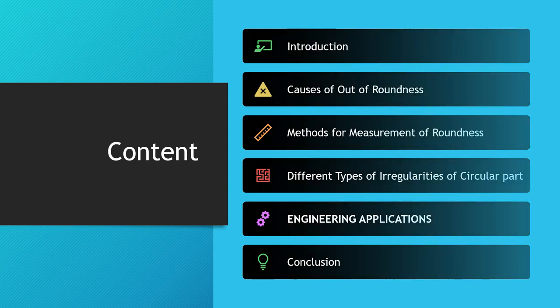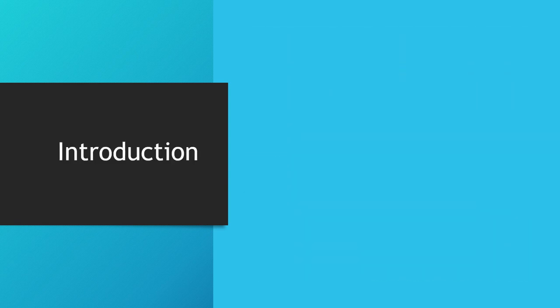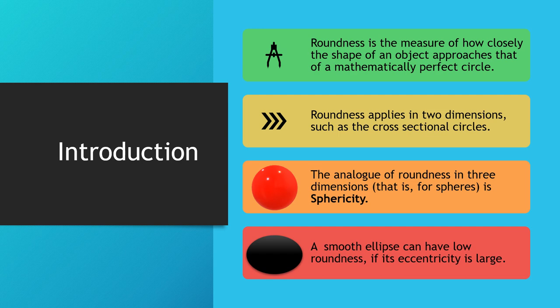Roundness can be defined as the measure of how closely the shape of an object approaches that of a mathematically perfect circle. It can also be defined as the radial uniformity of a work surface measured from the centerline of the work base. Roundness applies in two dimensions, such as cross-sectional circles along cylindrical objects such as a shaft or a cylindrical roller for a bearing.